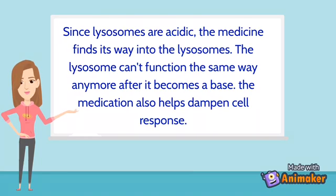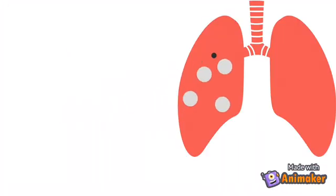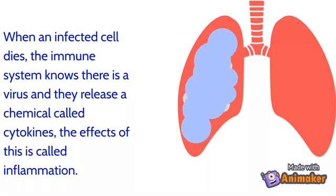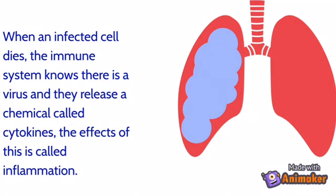When an infected cell dies, the immune system knows there's a virus. And they release chemicals called cytokines. The effects of this is called inflammation.